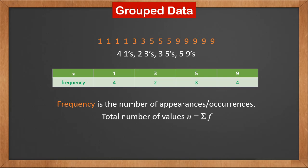The total number of values, n, is the sum of all frequencies, or sigma f. In this dataset, there are 13 values.